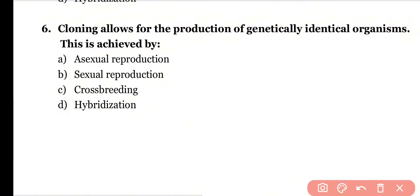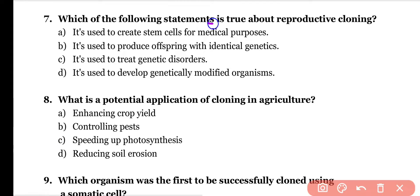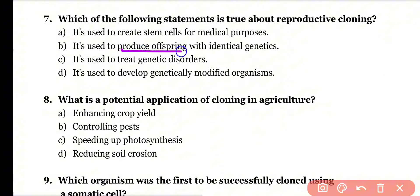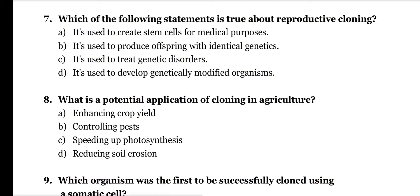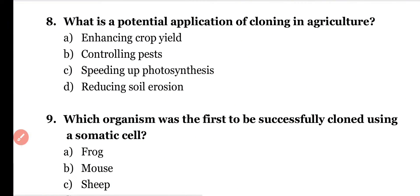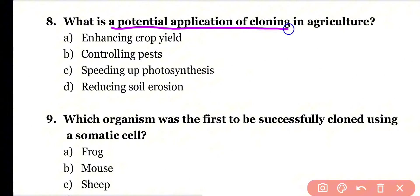Question number seven: Which of the following statements is true about reproductive cloning? It is used to create stem cells for medical purposes; it is used to produce offspring with identical genetics; it is used to treat genetic disorders; or it is used to develop genetically modified organisms. Reproductive cloning is actually used to produce offspring with identical genetics. Correct answer is option B.